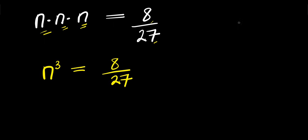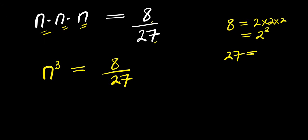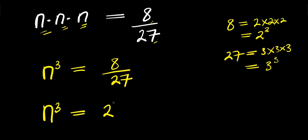Now I can express 8 as 2 times 2 times 2, that is 2³, and for 27 I can express it as 3 times 3 times 3, which is 3³. So I have n³ equals 2³ divided by 3³.